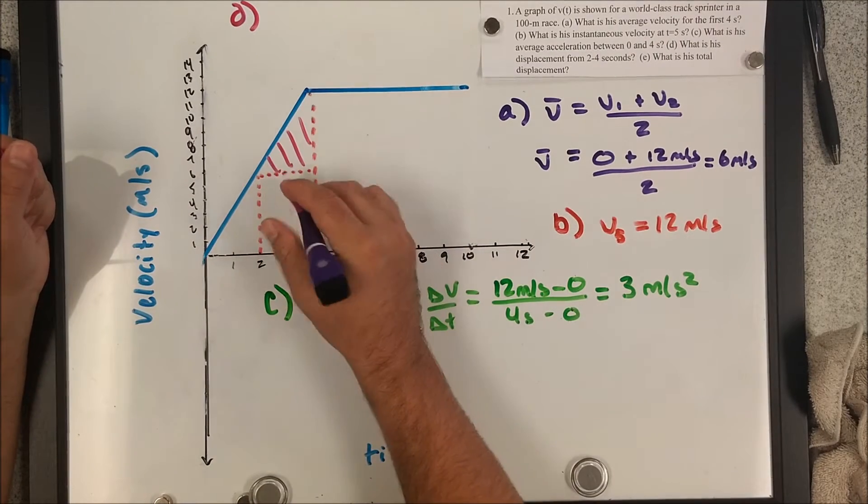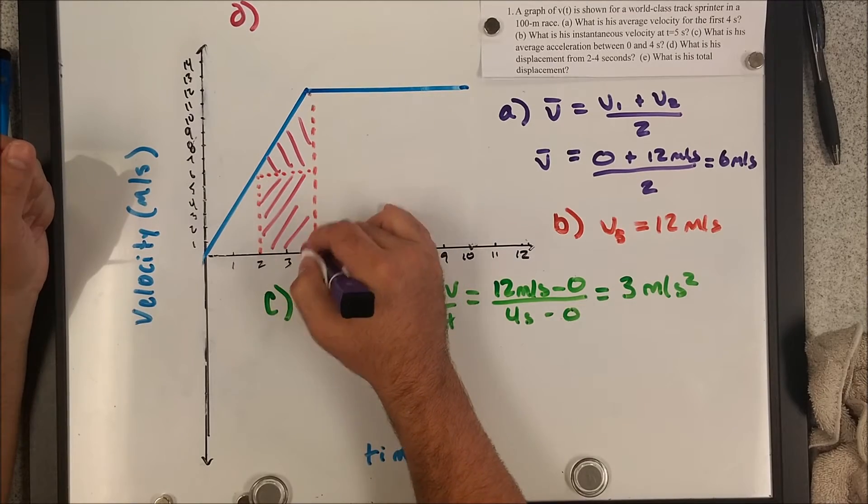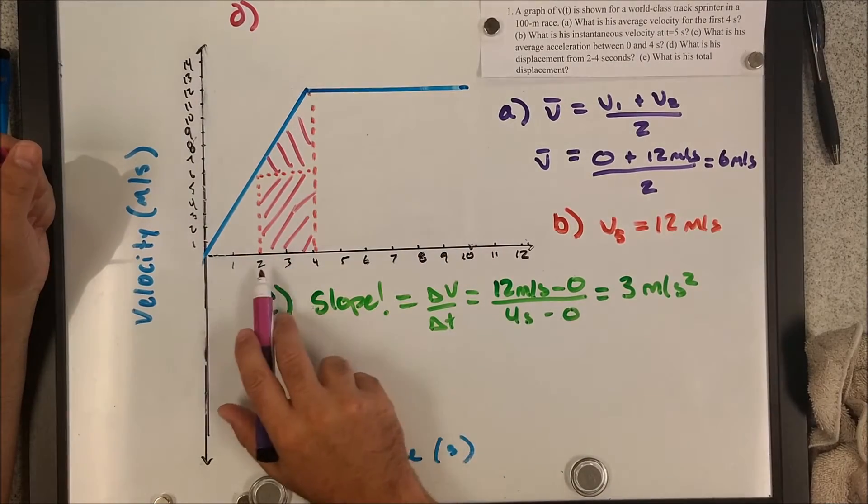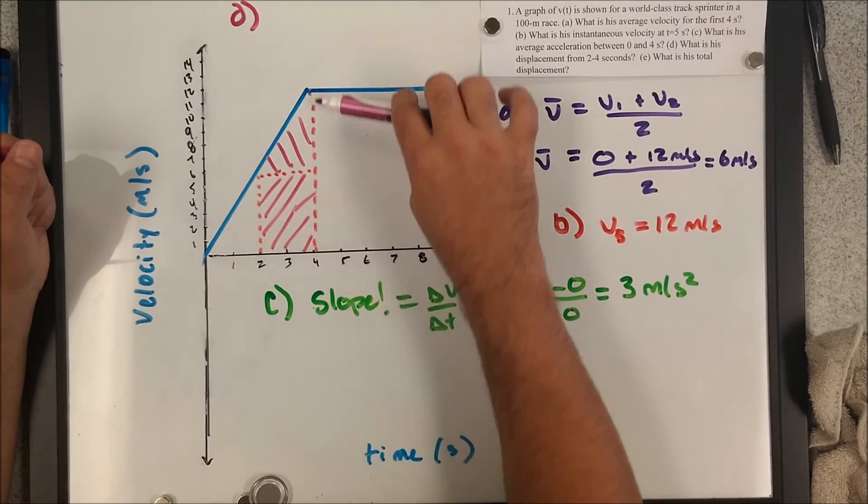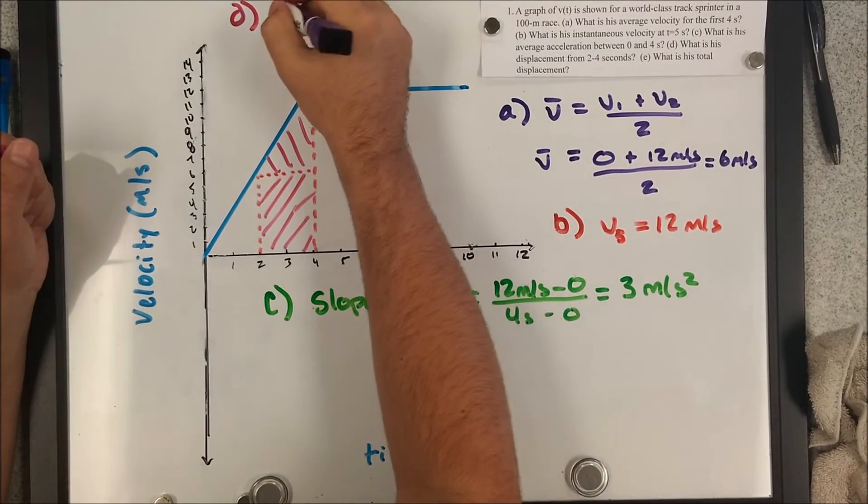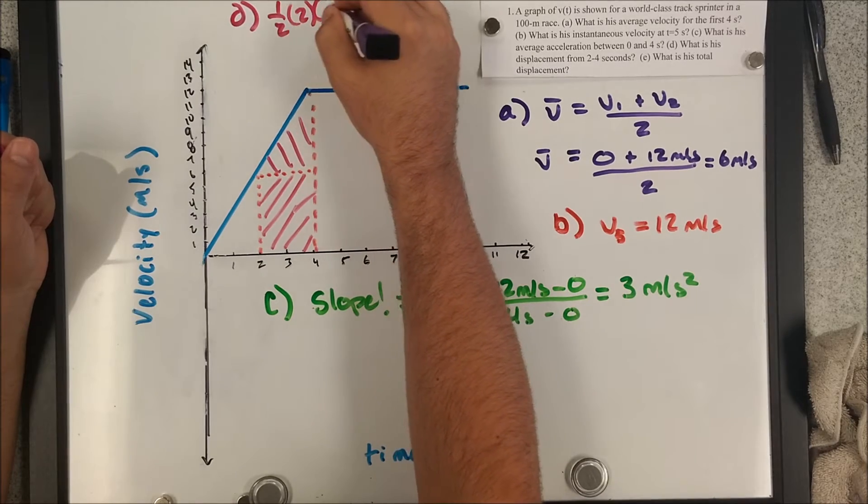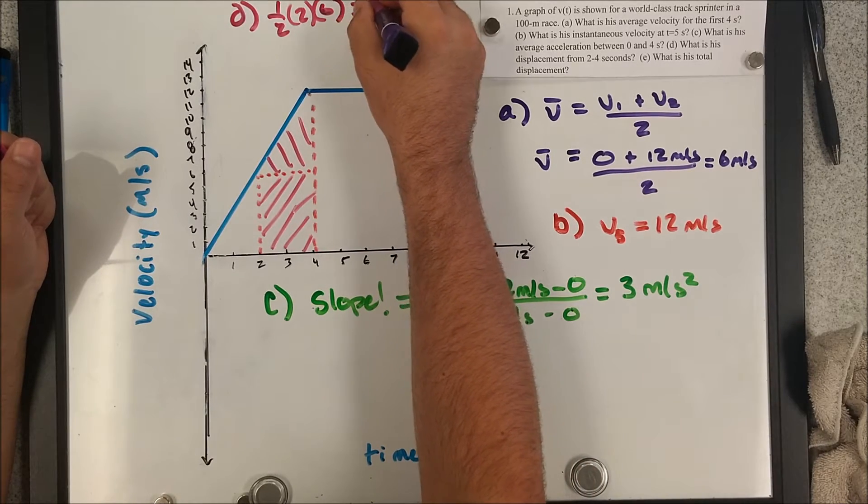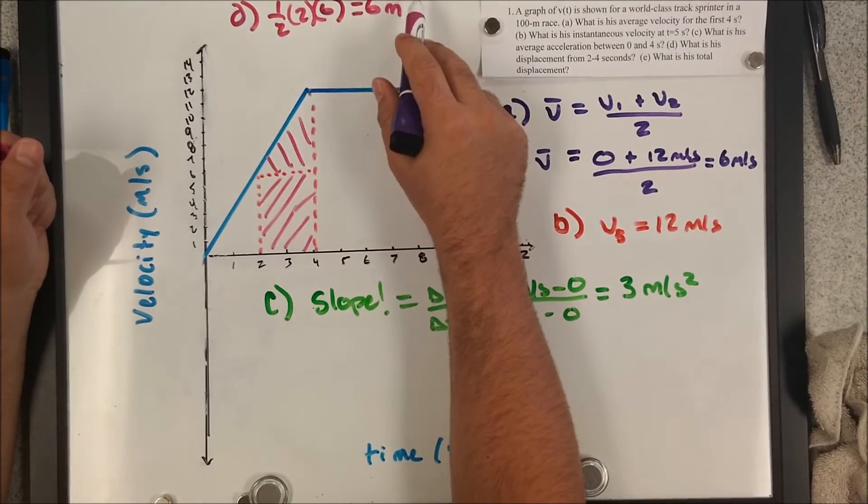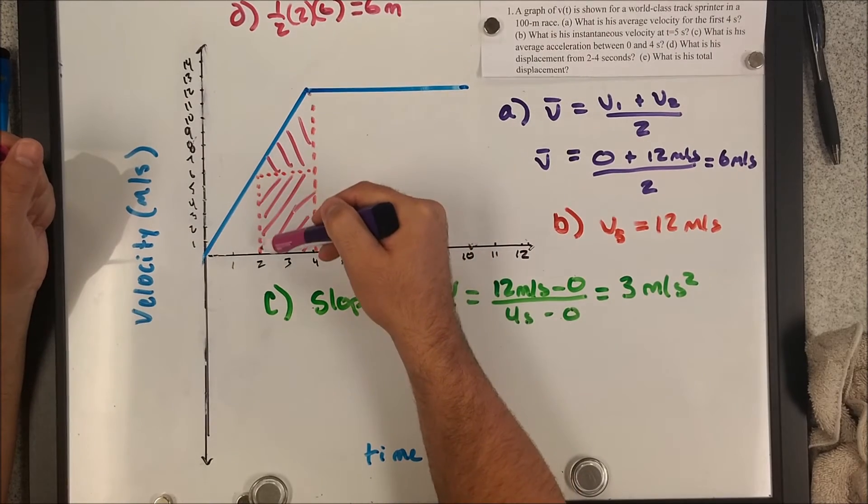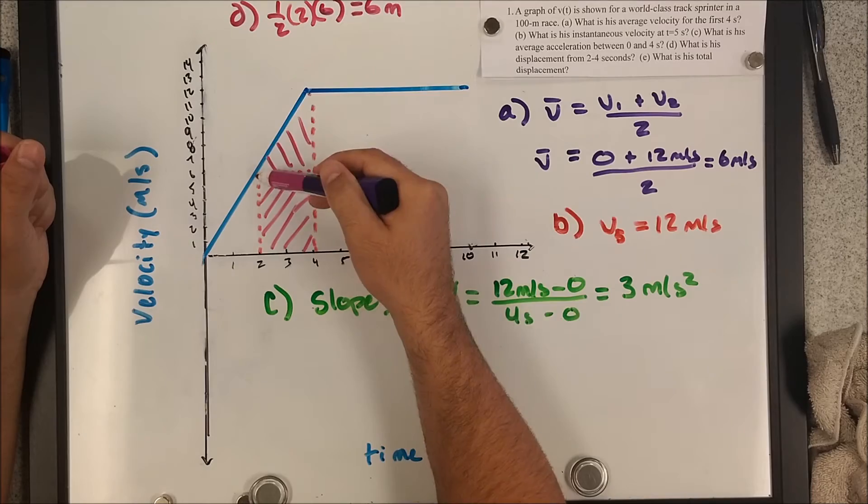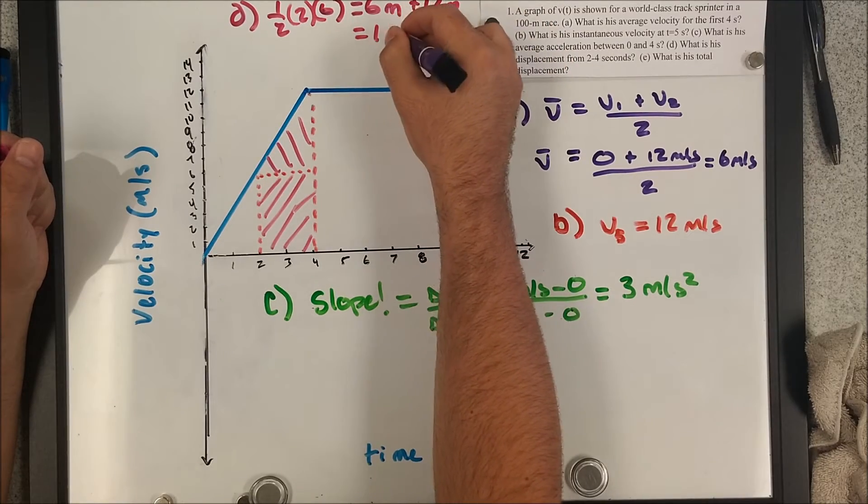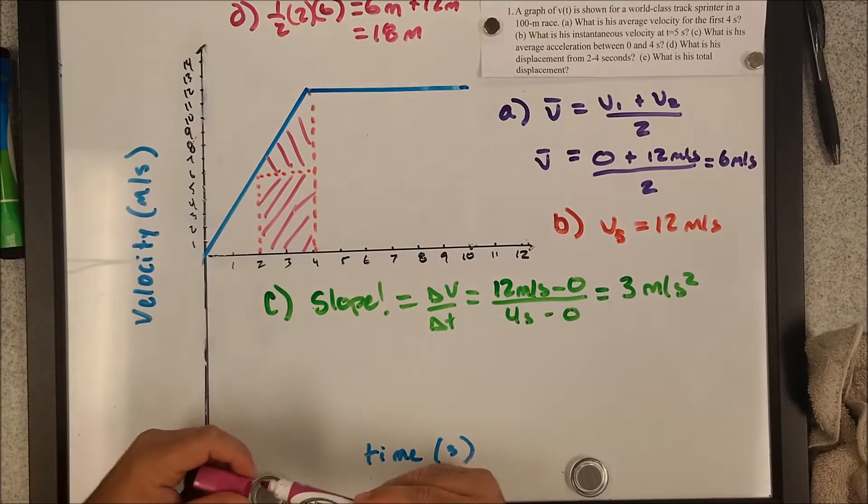I'm going to first find this triangle and then I'll find this rectangle. So the triangle, we do one half base times height. Well, the base is two to four, so two, and the height looks like I'm going from six to twelve. So that's going to be one half of two and then the height six to twelve is six. So one half of two times six. That's going to be six meters. I got to add that to the displacement for this rectangle, which is simply going to be two times six. So that's twelve meters. Looks like I'm getting a displacement of 18 meters for this segment.